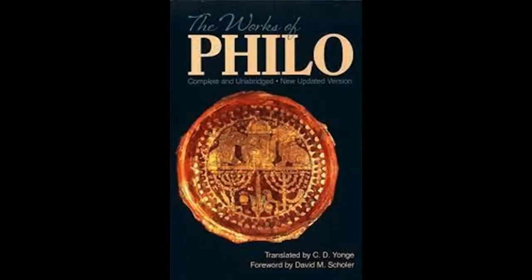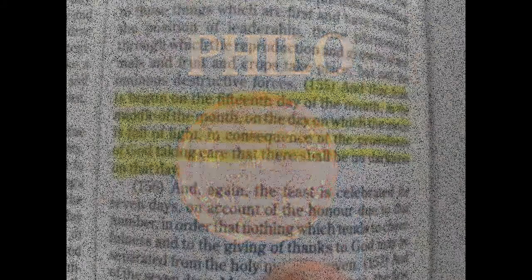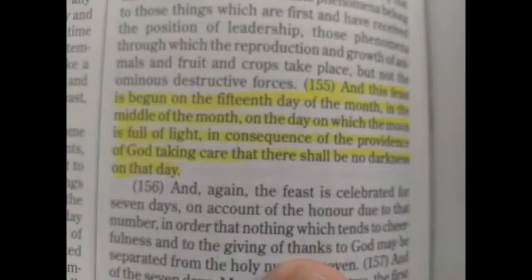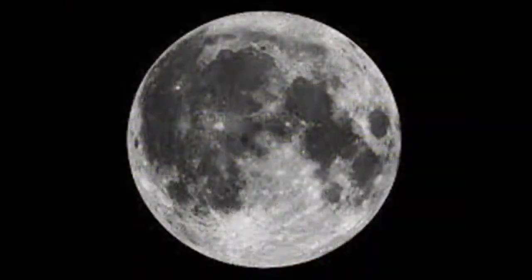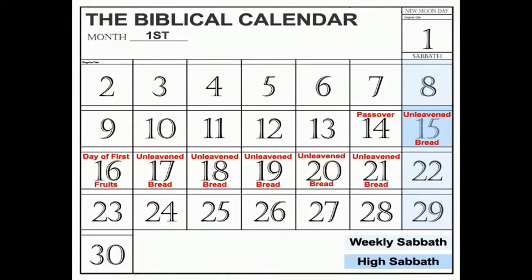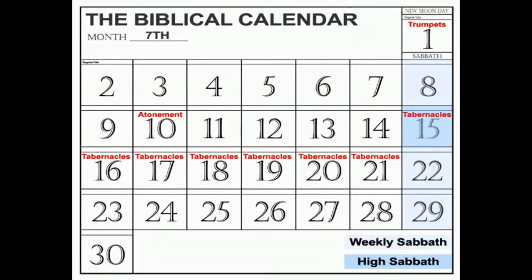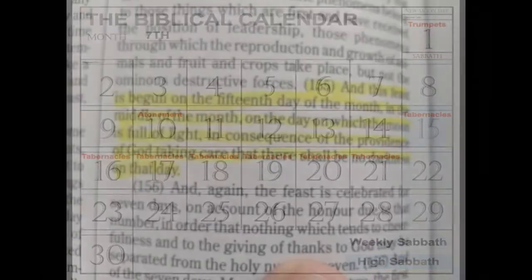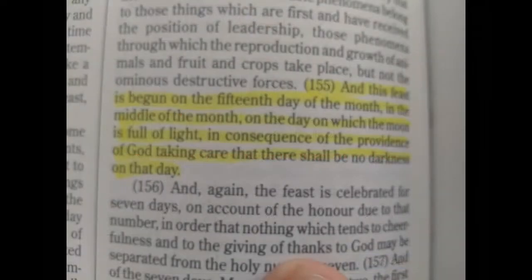This is the Book of Special Laws 2, in the works of Philo, paragraph 155, page 582: 'And this feast is begun on the 15th day of the month' — in the middle of the month — 'on the day on which the moon is full of light, and in consequence of the providence of Alahayim taking care that there shall be no darkness on that day.' So on your feast days — the beginning of the Feast of Unleavened Bread in the first month and the Feast of Tabernacles in the seventh month — on the 15th day of those months, Alahayim takes care that there should be no darkness on that day. It's not a coincidence that the phases of the moon are equal distances apart.